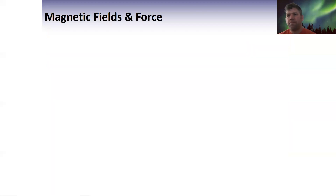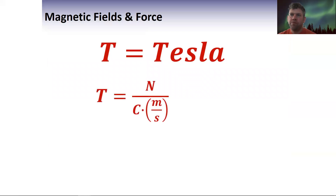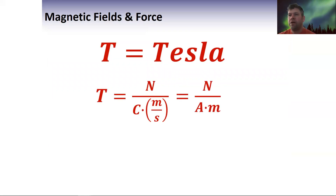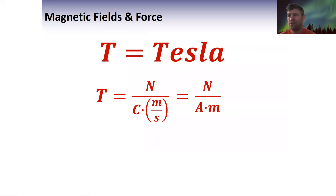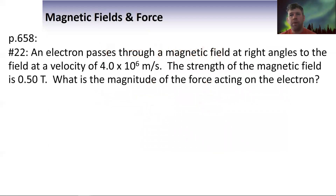A quick breakdown of what tesla means as a unit: it's newtons on top. For a point charge that's coulombs times meters per second in the denominator. We'll also use the version with amps times meters in just a little bit.